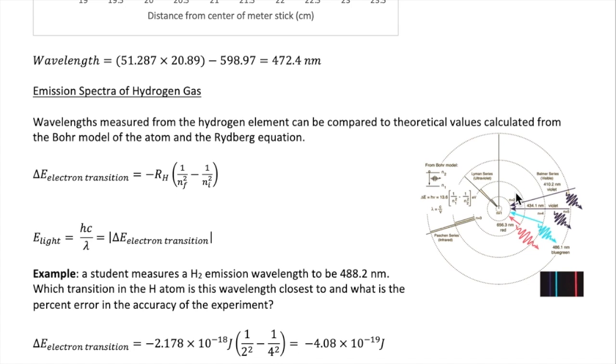The n value refers to the Bohr orbit values, initial and final positions of the electrons. Recall that when the electron moves from a higher Bohr orbit to a lower Bohr orbit, energy is emitted as a photon of light, and the energy of a photon of light is equal to hc over lambda. So lambda, or wavelength, can be calculated if we let the energy of light equal to the energy of the electron transition. We use an absolute value here because the wavelength is always a positive value.